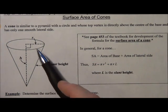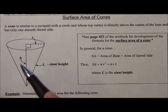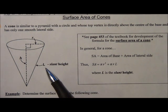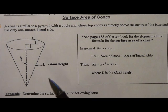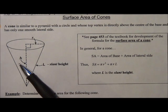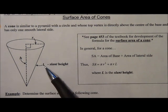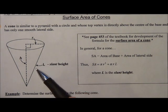So in this particular case, it would be r squared plus h squared equals l squared. And then you would square the r and the h, add them, take the square root of both sides, and that would give you l, which is the slant height.